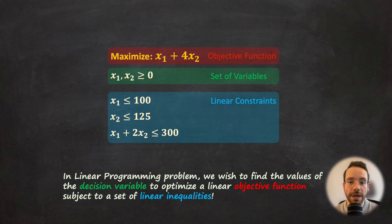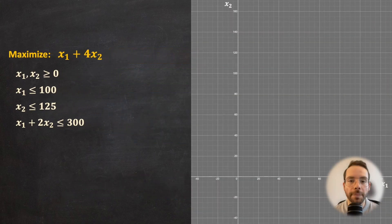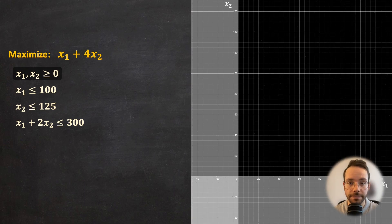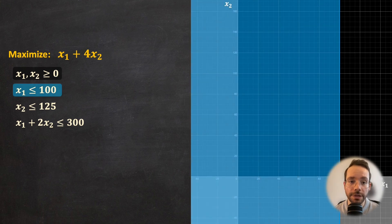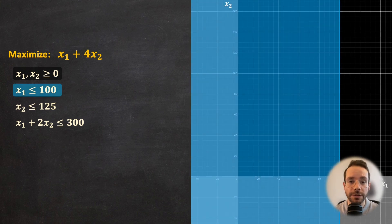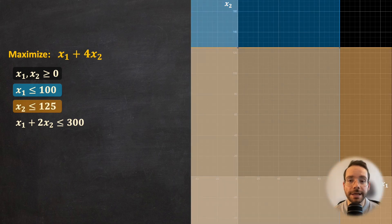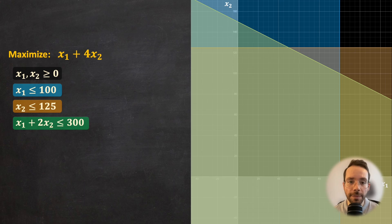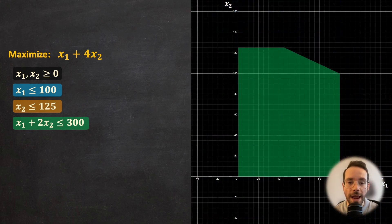These three components together form the general structure of the linear programming problem. Let's look into things visually. We have two positive variables here. So if you're looking at the top right quadrant, x1 should be less than or equal to 100 and x2 has to be less than or equal to 125. And the last constraint here says that the sum of x1 and 2x2 is less than or equal to 300. Let's clean this up a little bit to see what we have. We have narrowed down the space to a region where x1 and x2 can take their values from.